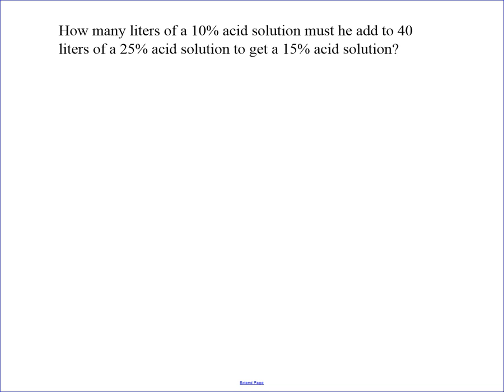In this case, we're going to write an equation about the acid in these solutions because we know the percent acid. So what's happening is you're adding a certain amount of 10% solution. We don't know what that is, so that's going to be our x value, because that's what we don't know. We always make the variable what we don't know. We're going to add that to 40 liters of a 25% solution to get a 15% acid solution.